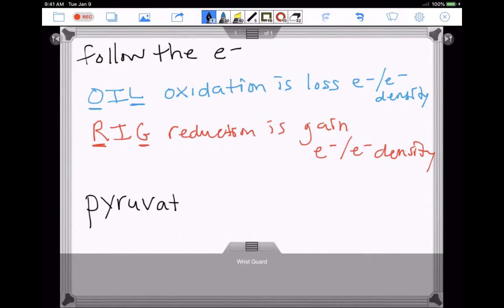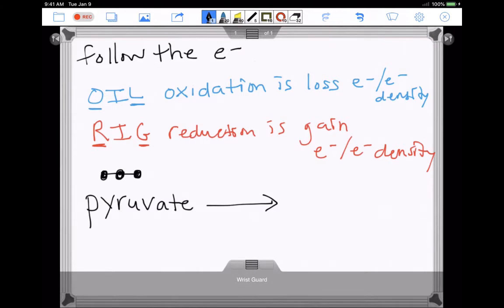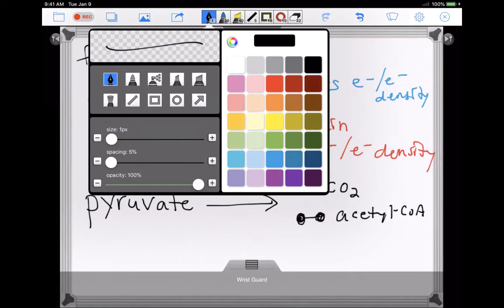So pyruvate is a three-carbon molecule, and in the oxidation of pyruvate step it's converted into a one-carbon CO2 and then a two-carbon acetyl-CoA. Yes, you need to know these, but not for this exact purpose right here. This is just illustrating.